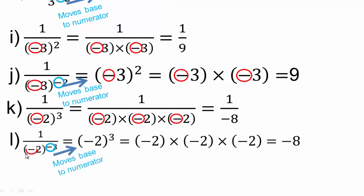Negative 2 to the negative 3rd power: the base is negative 2, so the base always stays. The negative 3rd power on the denominator makes it move to the numerator — the base moves to the numerator and the exponent changes sign.